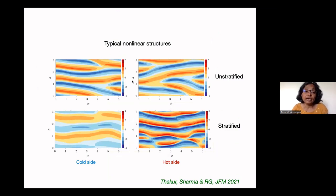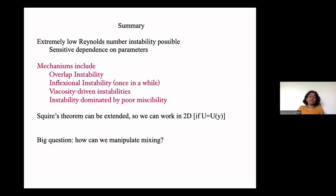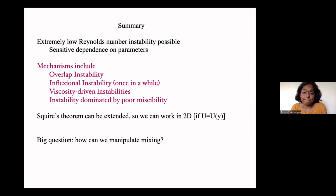The typical nonlinear structures are also very strongly affected by viscosity stratification. Here with a heated wall, the nonlinear structures on the hot side are completely different from the cold side — much more intensified, and lower wave number compared to unstratified flow. The summary of the talk is given here; thank you for your attention.